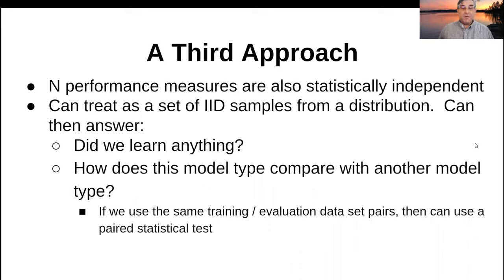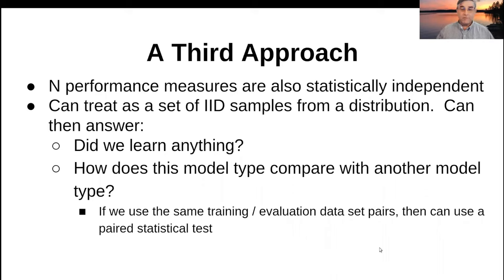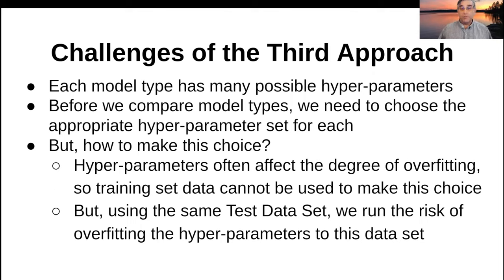We can ask: did we learn anything? Or how does this particular model type compare with other model types? If we've constructed two different model types using the same pairs of training and evaluation sets, we can make use of that fact to build paired statistical tests; otherwise, we can use two-sample types of tests. A reasonable approach is to use a Student's t-test to compare different models — specifically, a statistical test about the means of the distribution, asking what's the mean error provided by each model type.